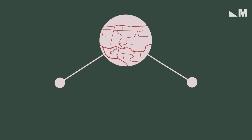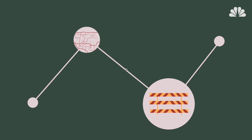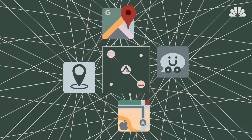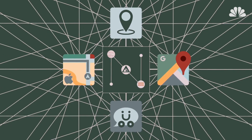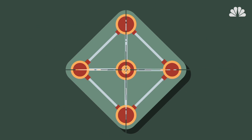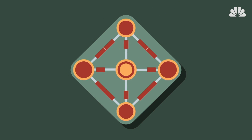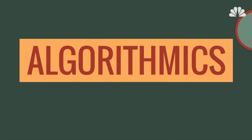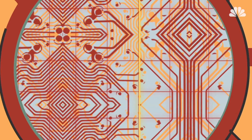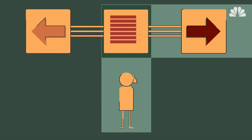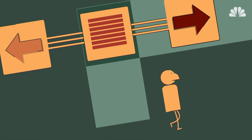It sounds simple, but consider road networks, street closures, and rivers running through a city. Today's map programs are by necessity complex, but many of them owe a lot to one simple algorithm from the 1950s. This is Algorithmics, the space where we explore how invisible, computer-controlled, database sets of rules are making decisions for us every day.